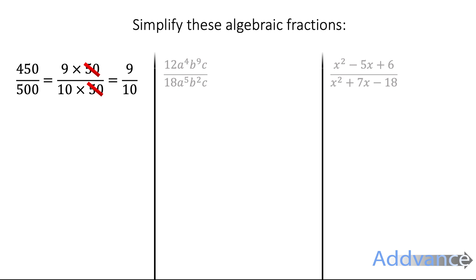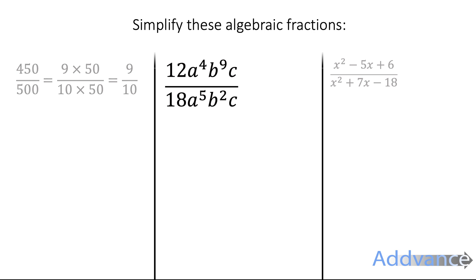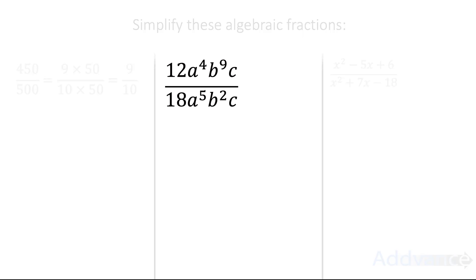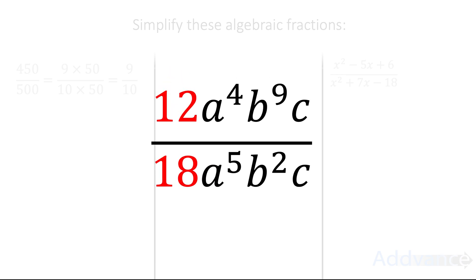But if you're happy and ready to continue, let's try the next one: 12a to the power 4, b to the power 9, times c, over 18a to the power 5, b squared, c. That looks quite complicated, but all we're going to do is deal with the numbers, then deal with the a's, then the b's, then the c's.